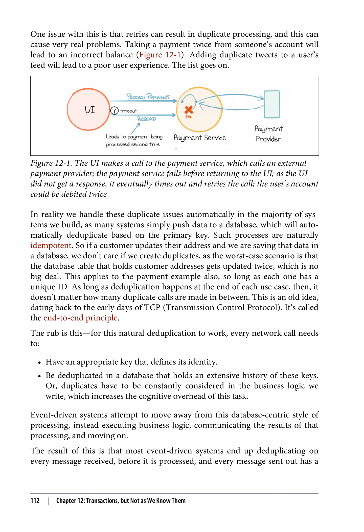Taking a payment twice from someone's account will lead to an incorrect balance (figure 12-1). Adding duplicate tweets to a user's feed will lead to a poor user experience. The list goes on. In reality we handle these duplicate issues automatically in the majority of systems we build, as many systems simply push data to a database, which will automatically deduplicate based on the primary key. Such processes are naturally idempotent. So if a customer updates their address and we are saving that data in a database, we don't care if we create duplicates, as the worst case scenario is that the database table that holds customer addresses gets updated twice, which is no big deal. This applies to the payment example also, so long as each one has a unique ID.